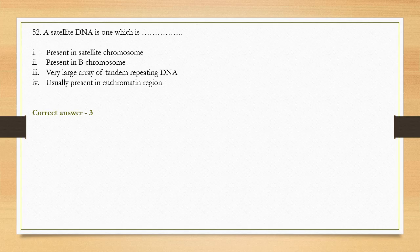Satellite DNA is not found in the euchromatic region — it is found in the heterochromatin region, which is the highly condensed part of the chromosome. It is also found in the telomere region at the ends of chromosomes. So option 3 is correct.